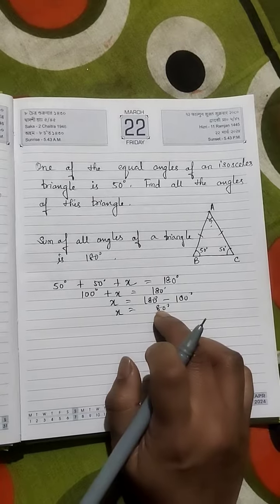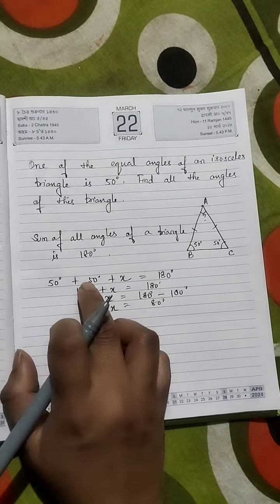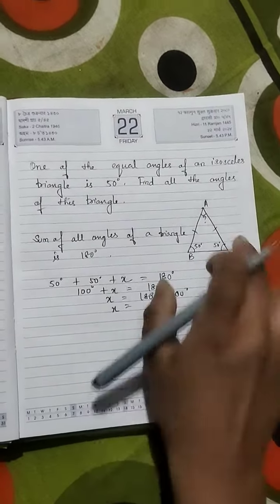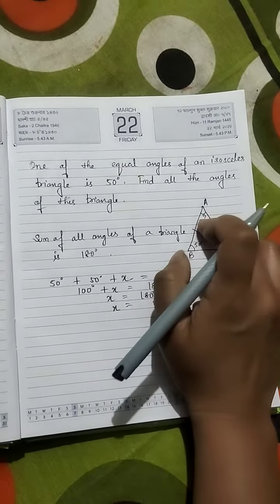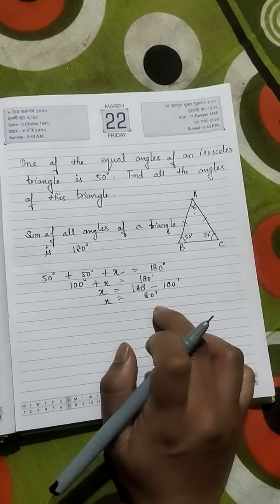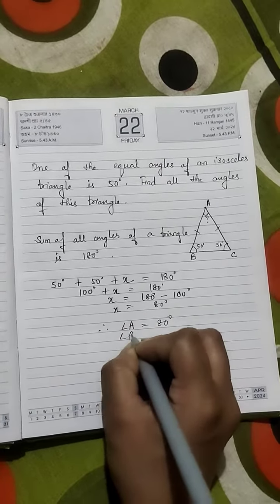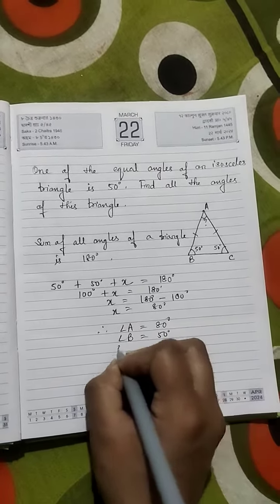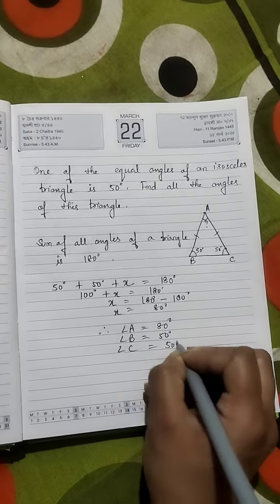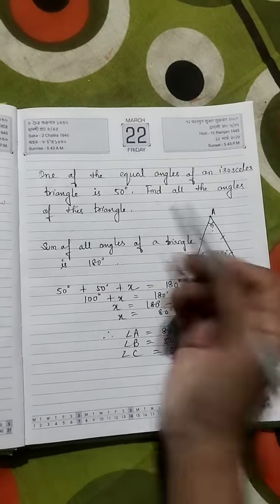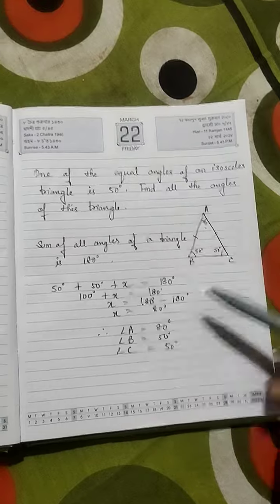Now look, 50 plus 50 is 100, 100 plus 80 is 180. So the unknown angle is 80 degrees. Therefore, angle A equals 80 degrees, angle B equals 50 degrees, angle C equals 50 degrees. We found all the angles of the triangle.